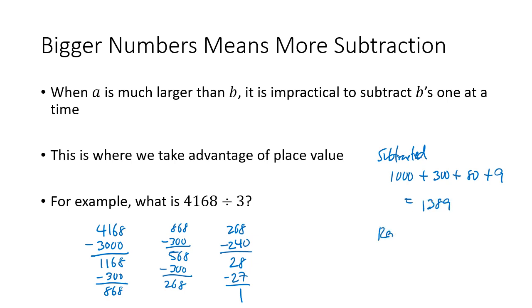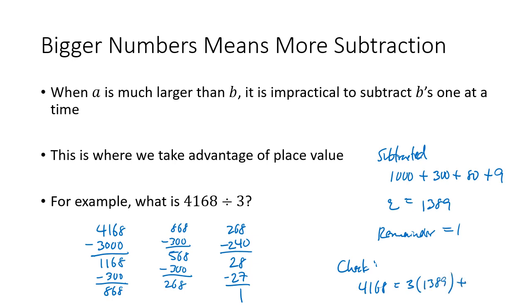My quotient is 1,389 and my remainder is 1. And if we want to check that, we can check by making sure that 4,168 really is 3 times 1,389 plus 1.